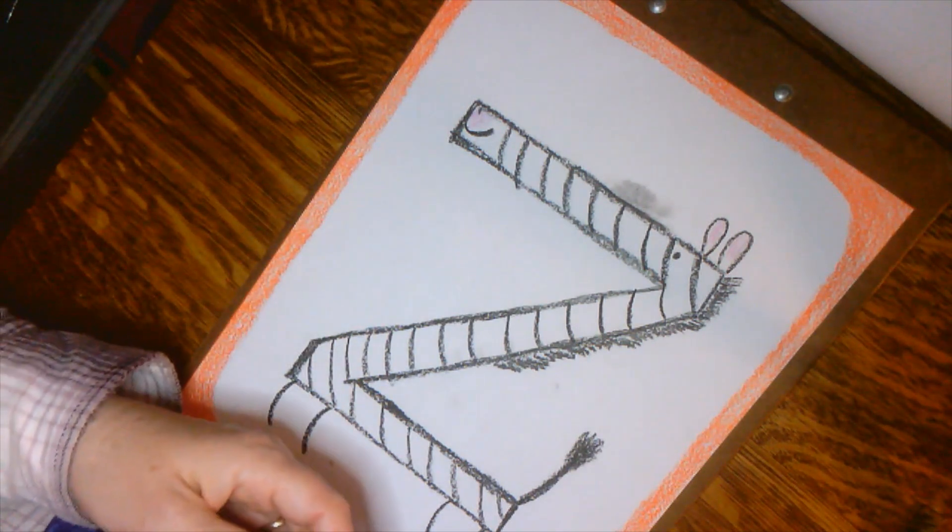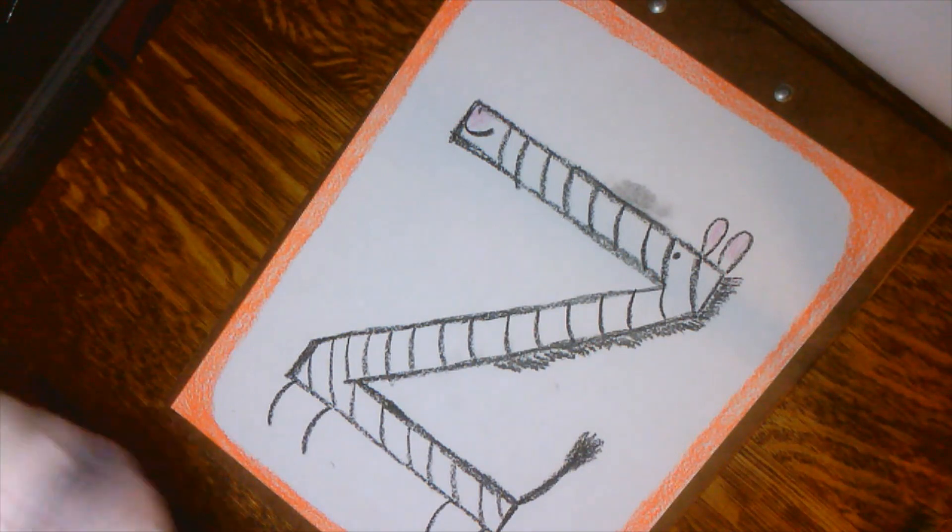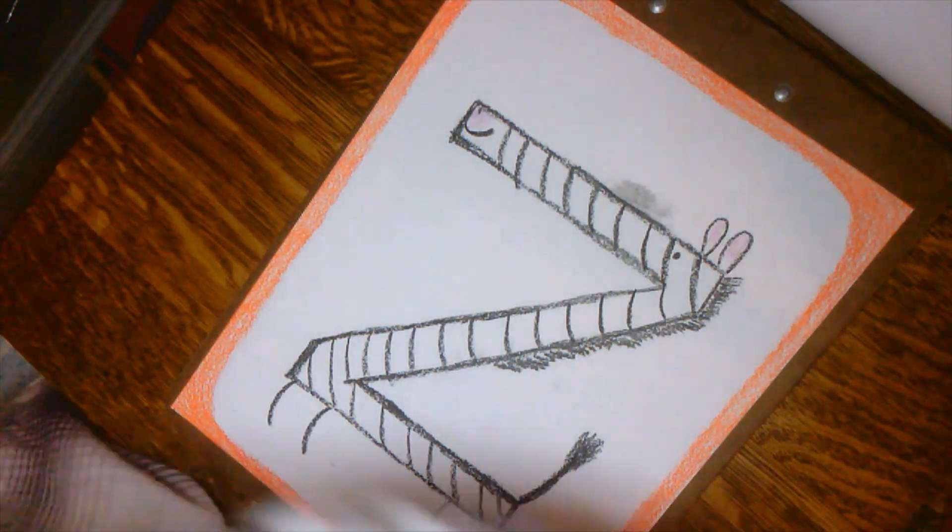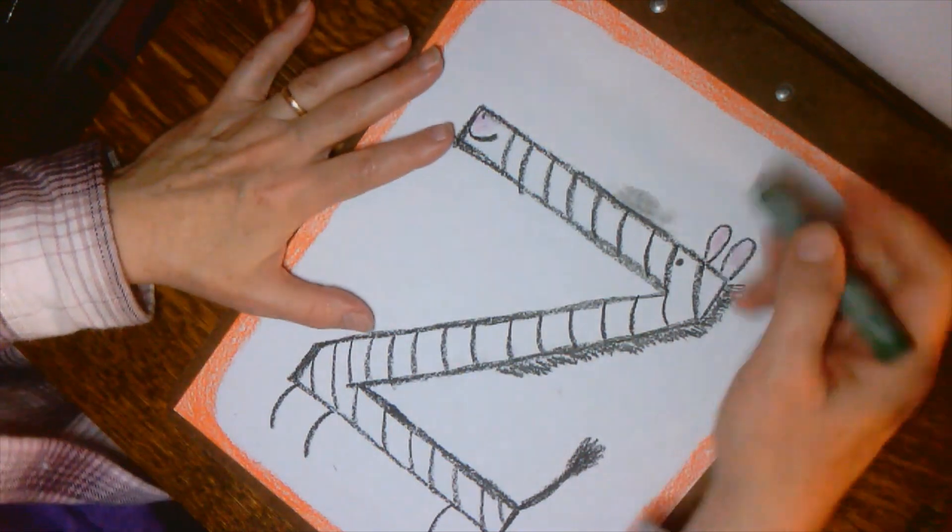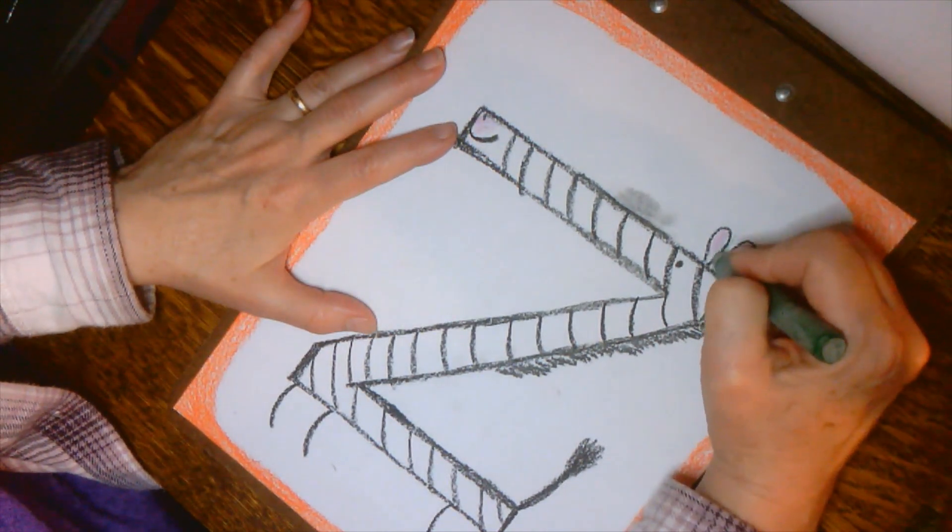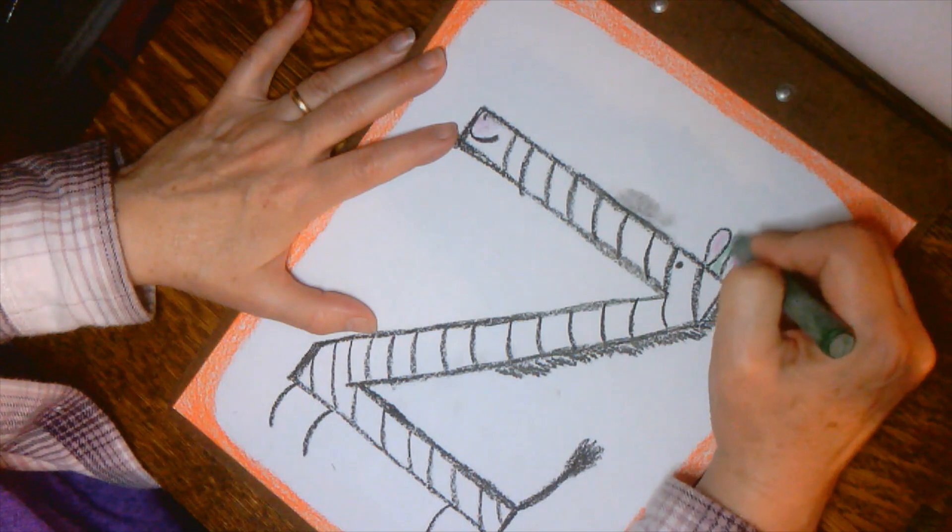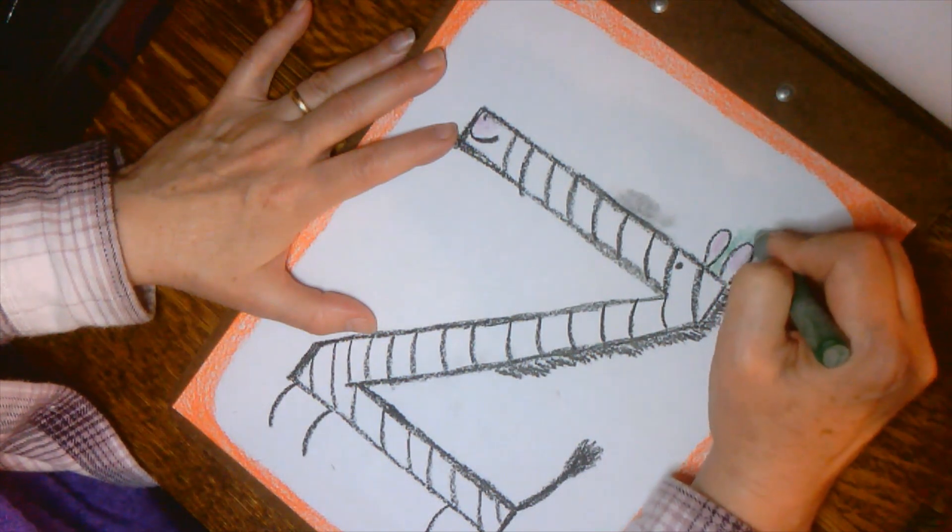Now anytime we do the background I've mentioned that it's kind of important not to just be scribbly because then you know it gets all in your picture but especially now when we want so much of the white to stay it's going to be important to work carefully especially when you're close to Zack the zebra.